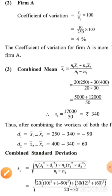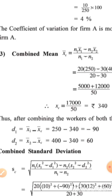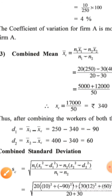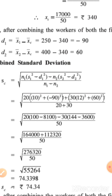Now we find the combined standard deviation. For this we need D1 and D2. D1 = X̄1 − combined mean = 250 − 340 = −90. D2 = X̄2 − combined mean = 400 − 340 = +60.